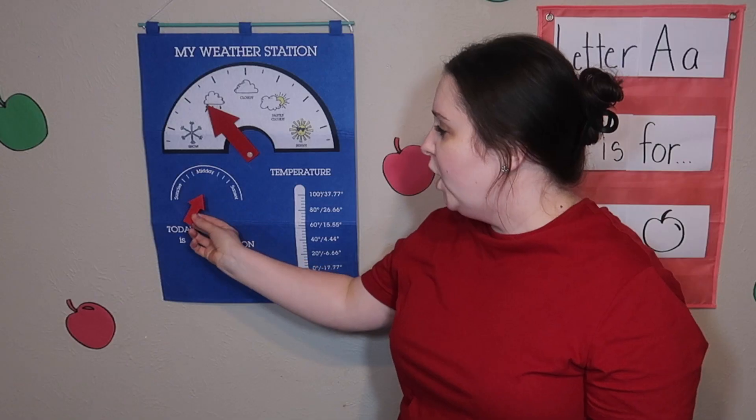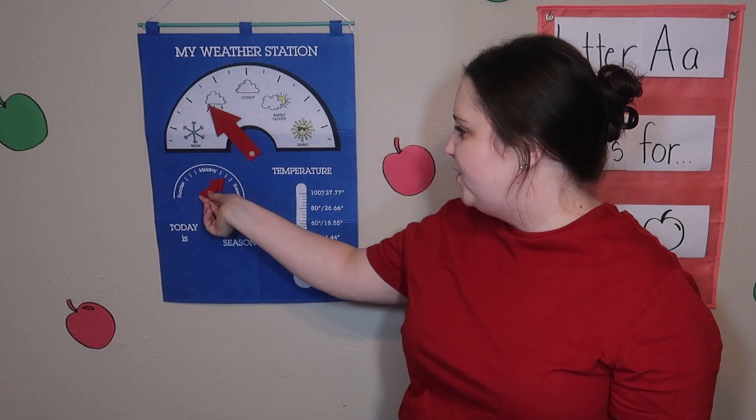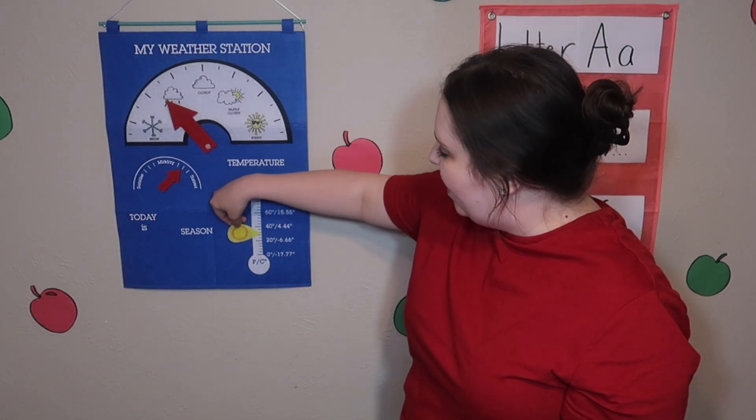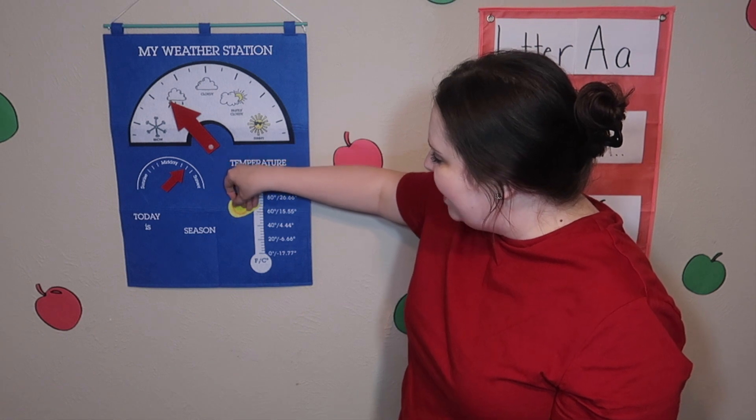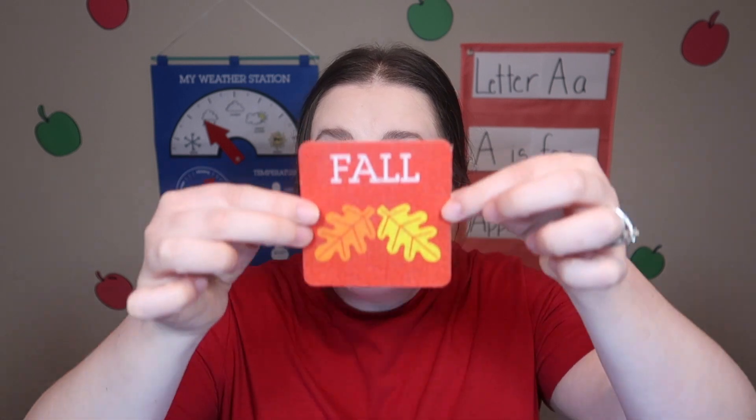Let's head back over to our weather chart. Now that we know it's three o'clock, we can use our red arrow and put it right here between midday and sunset. We're going to use our special sunshine arrow to figure out what the temperature is. Where I'm from, we use Fahrenheit, so we're going to move our arrow up to 70 degrees. It may be raining, but it's still pretty mild out — not super cold and not super hot, so we say mild. And the season we're in is fall.